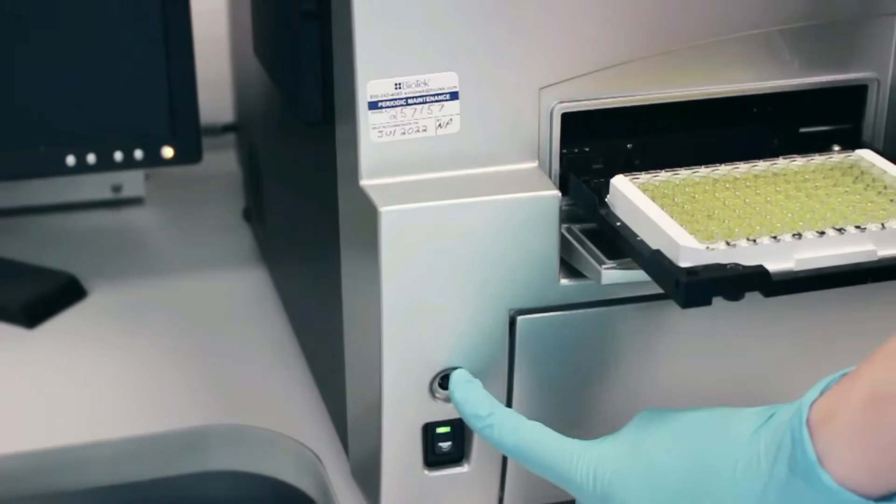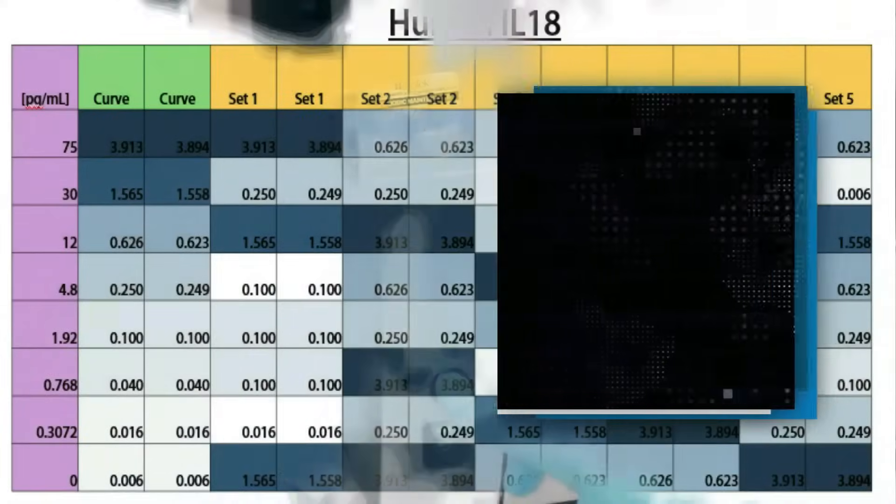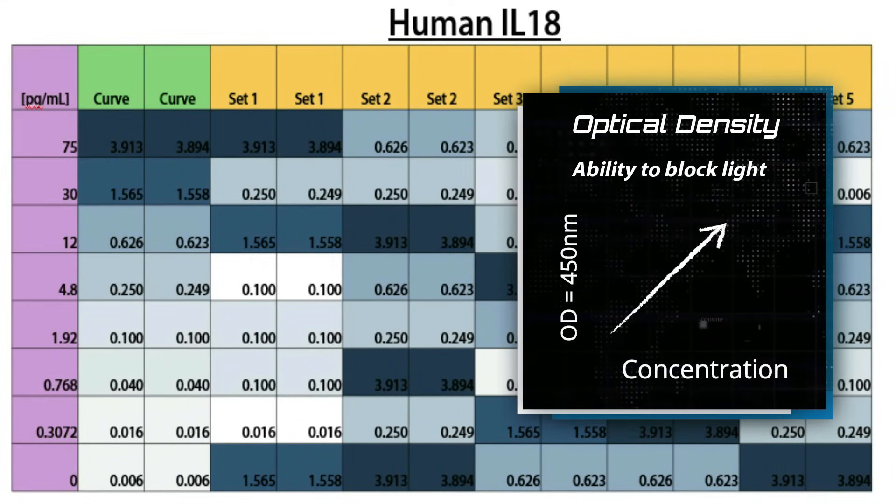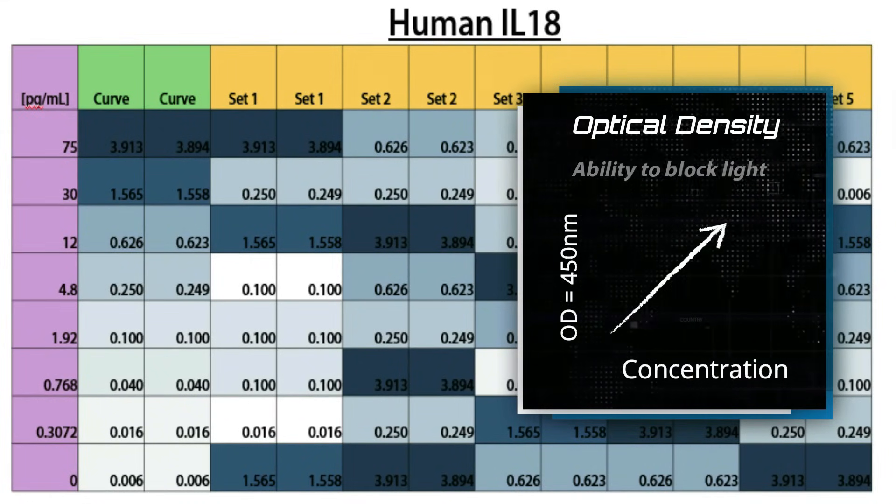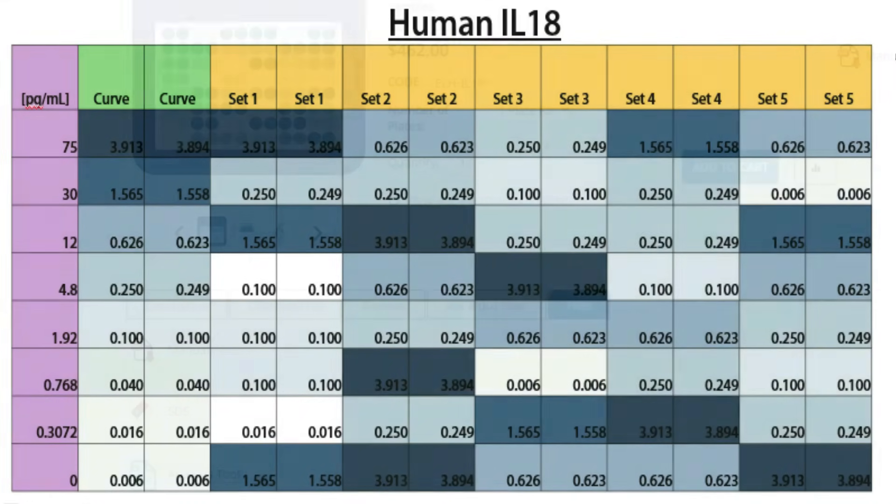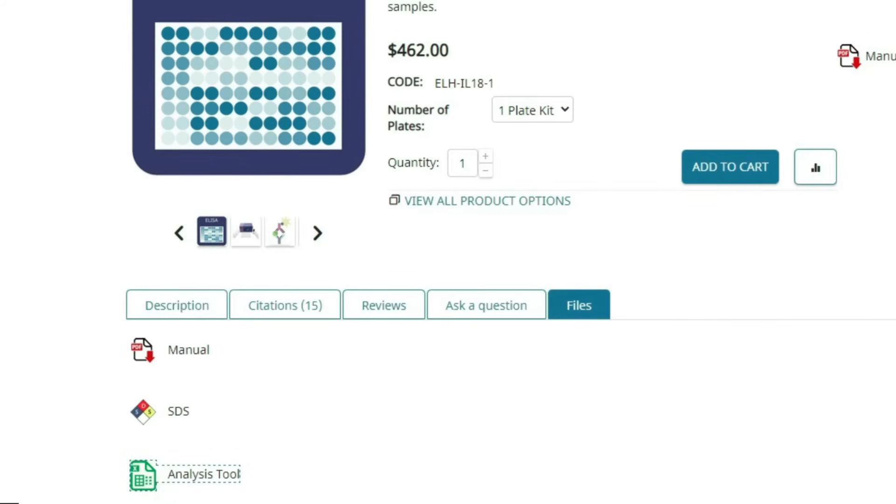The color intensity is calculated as optical density, or the ability to block light. The higher the OD, the higher the concentration. To calculate the standard curve and calibrate your samples against it, use the analysis tool found on the website.